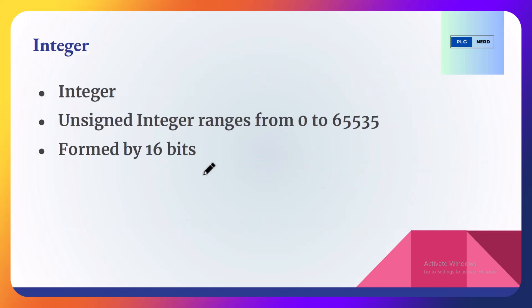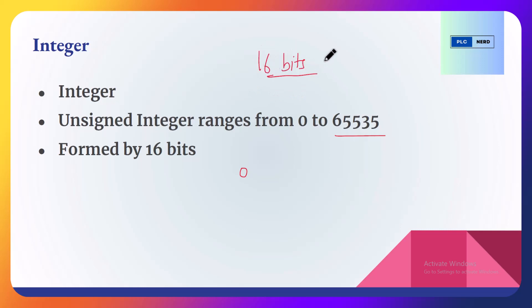Integer — normally integer values range from 0 to 65535, and it is also formed by 16 bits. These 16 bits are then represented as a decimal value. You can refer back to the previous slide to see how we convert a 16-bit value to decimal. So integer is also one of the PLC data types.